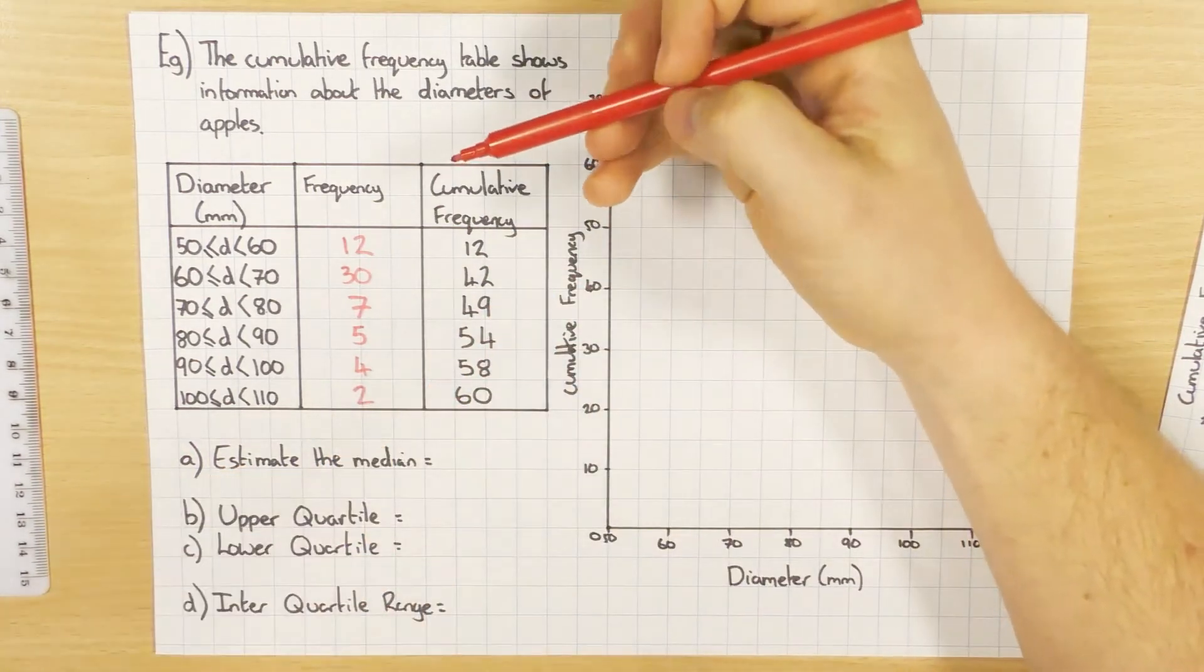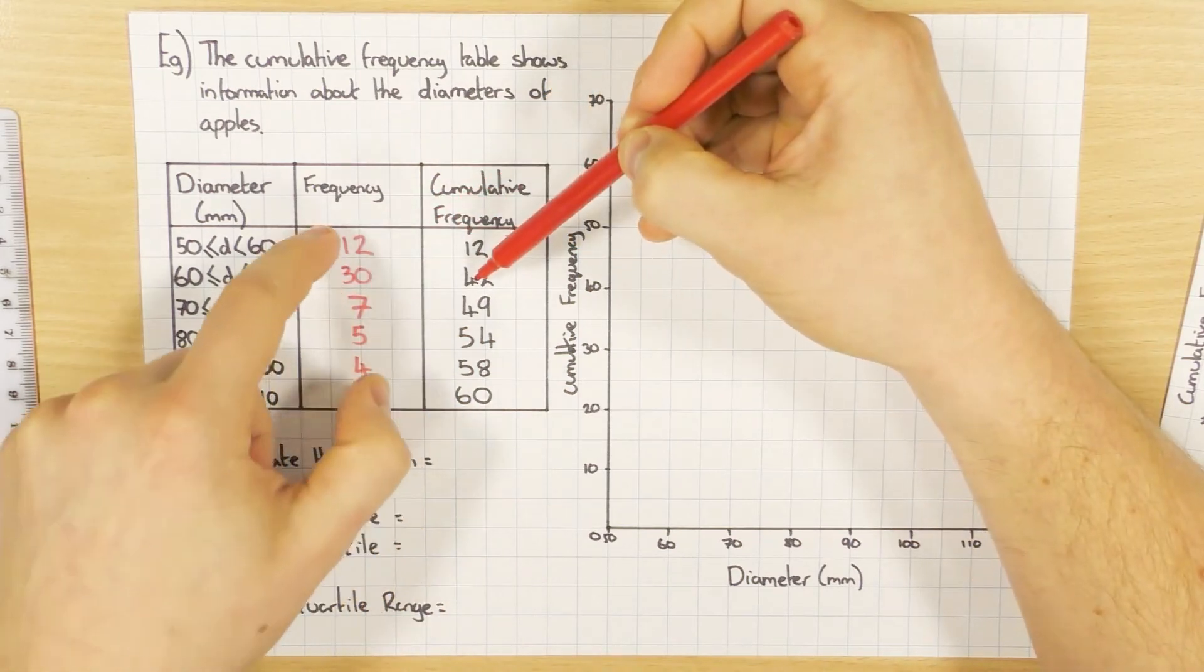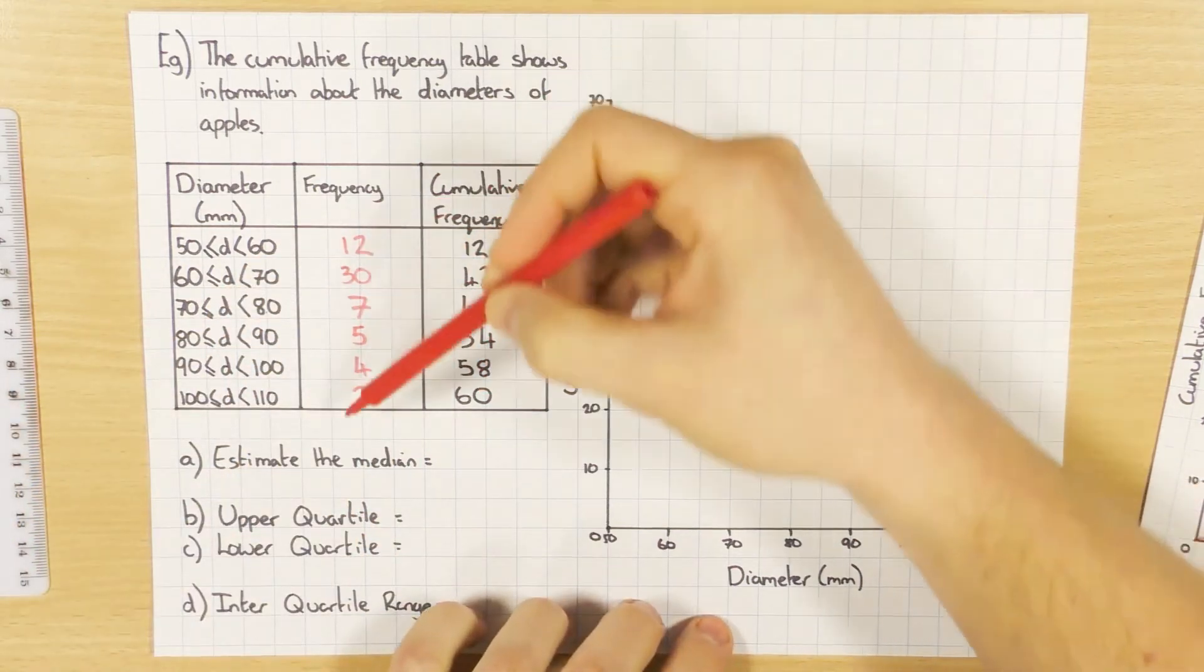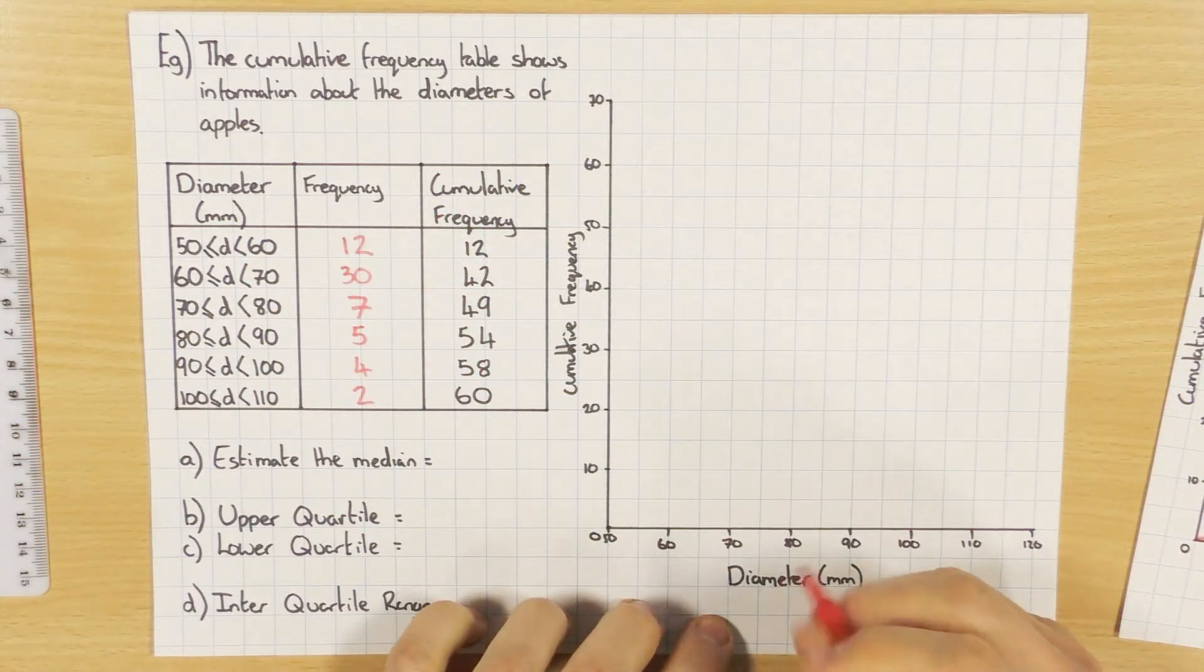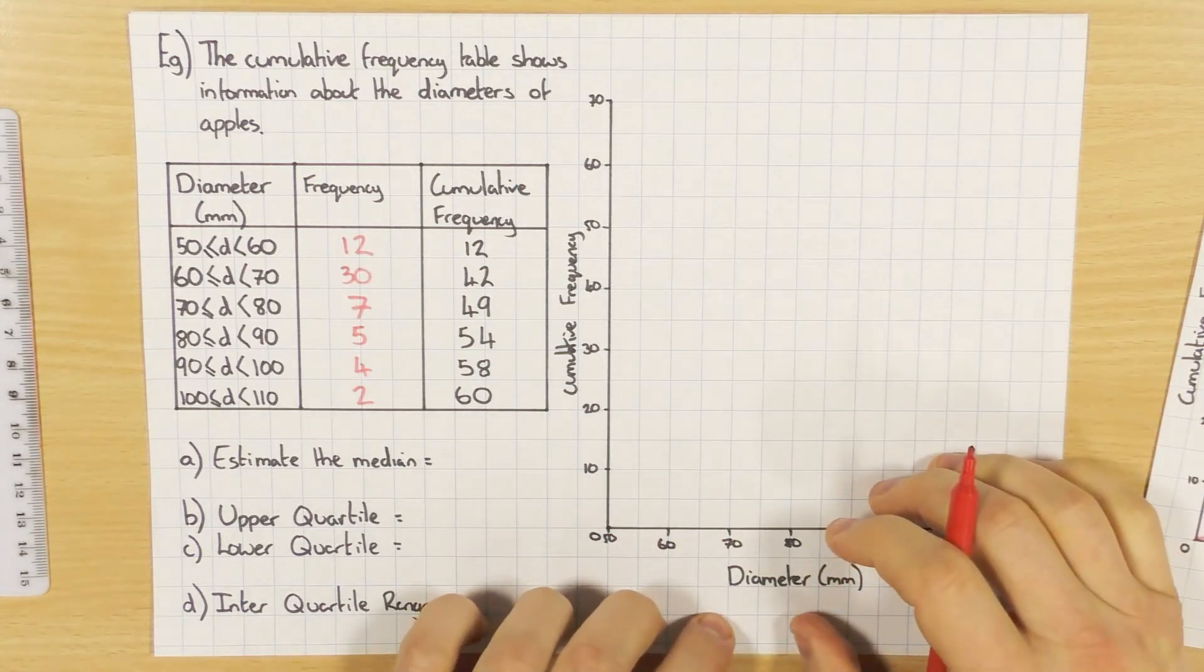So again, you can check that this is correct. So 12 add 30 is 42. 12 add 30, 7 is 49, and so on and so forth. So you can check that you've got your frequencies correct. So that's the purpose of this one. And the rest of it was exactly the same as the first example.